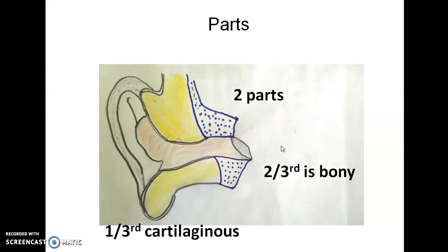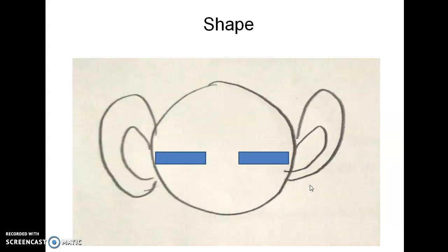And this part is closer to the bone, so that will be bony. The inner two-thirds of the external auditory canal is bony. It is related to temporal bone, petrous part of temporal bone.